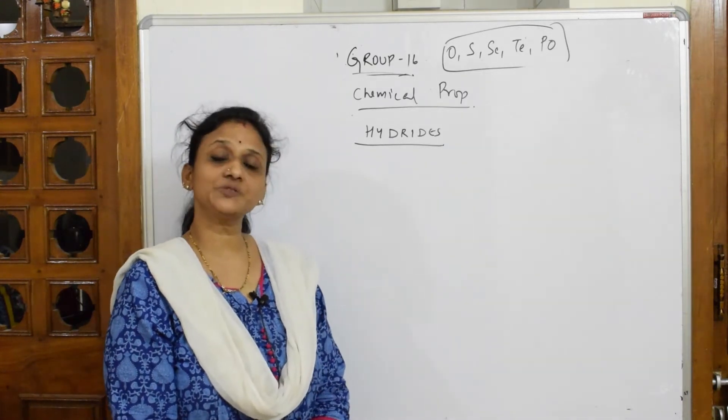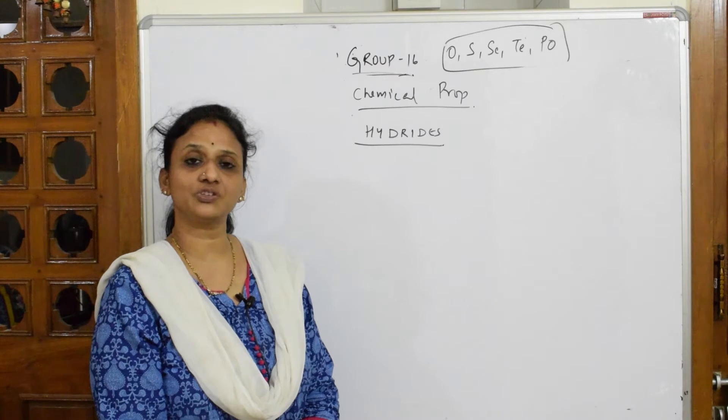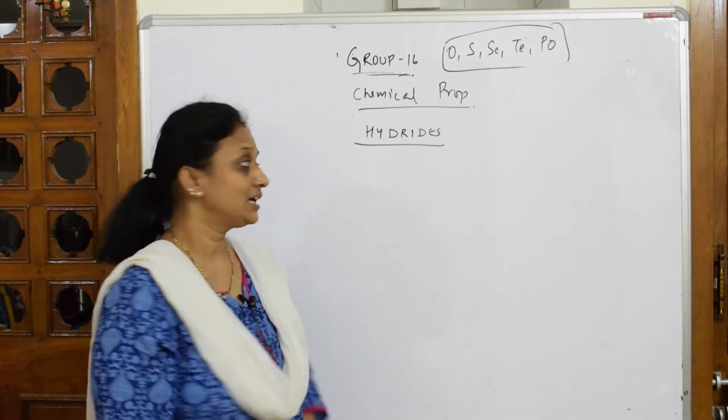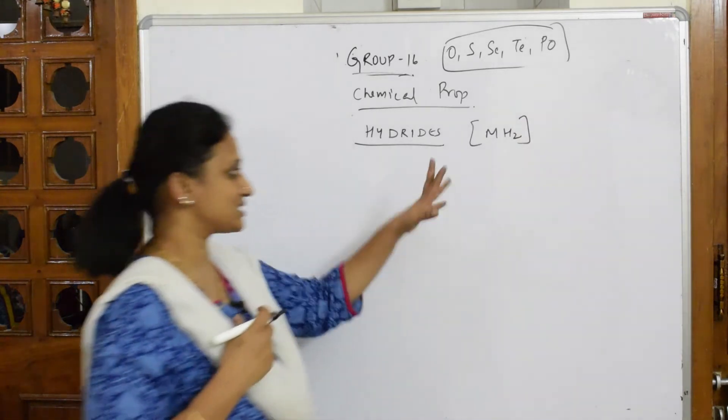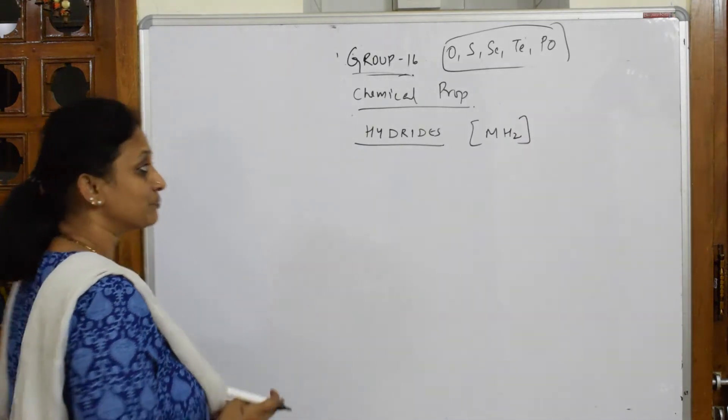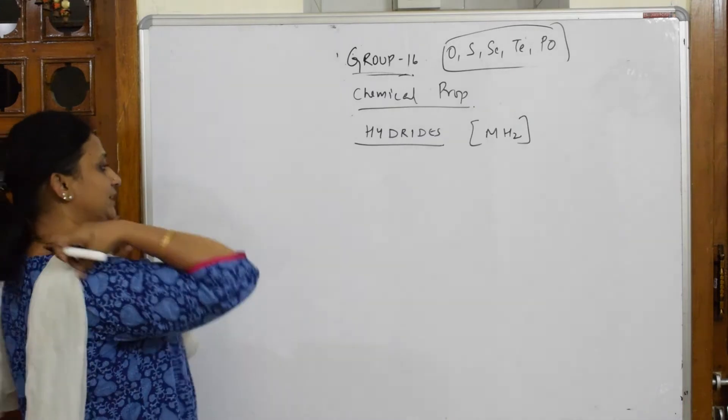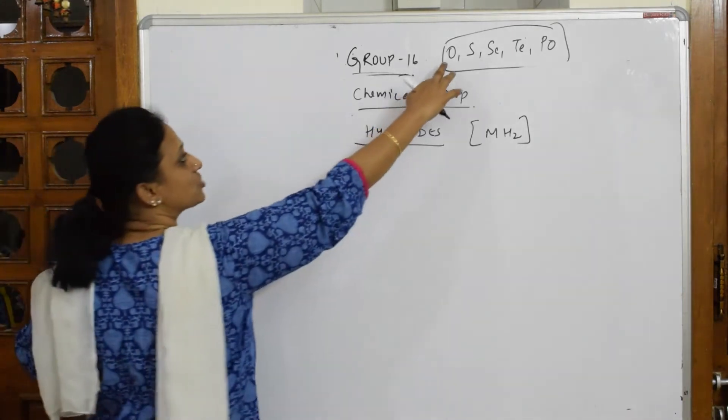In hydrides, the Group 16 elements are going to form hydrides of type MH2. The general formula is metal and hydrogen, that is MH2. Let me show you with an example. Suppose if I take the first element, the first element is oxygen.